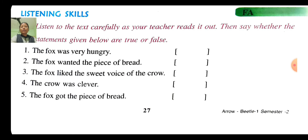Let me repeat once again. First number: the fox was very hungry — true. Second: the fox wanted the piece of bread — true. Third: the fox liked the sweet voice of the crow — false. Fourth number: the crow was clever — false. Fifth: the fox got the piece of bread — true. Dear students, I will send you the answers through PDF.